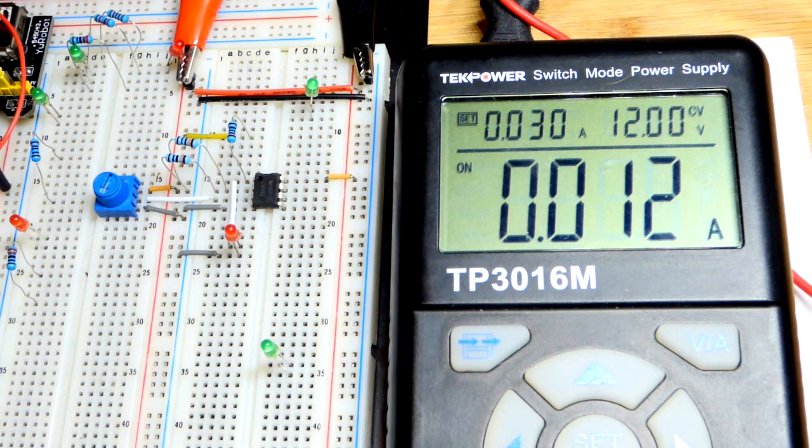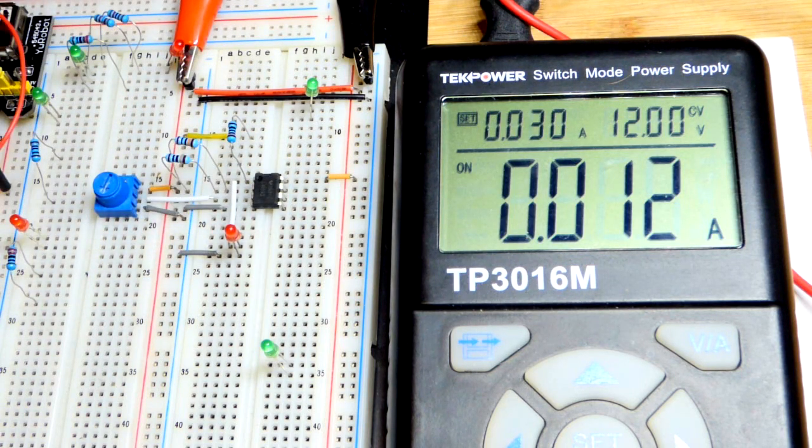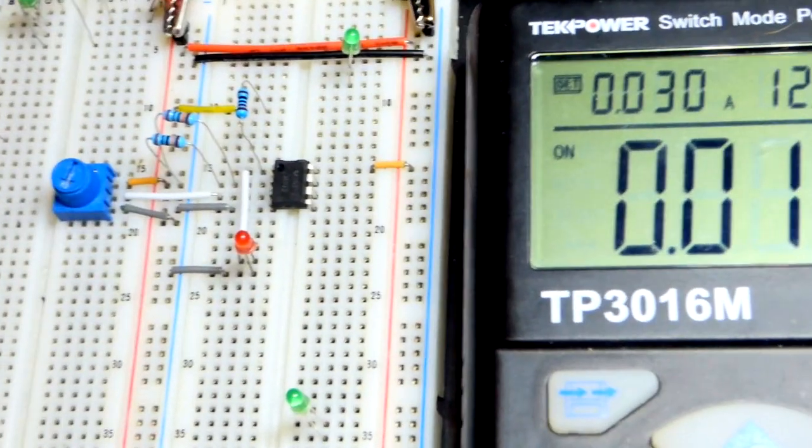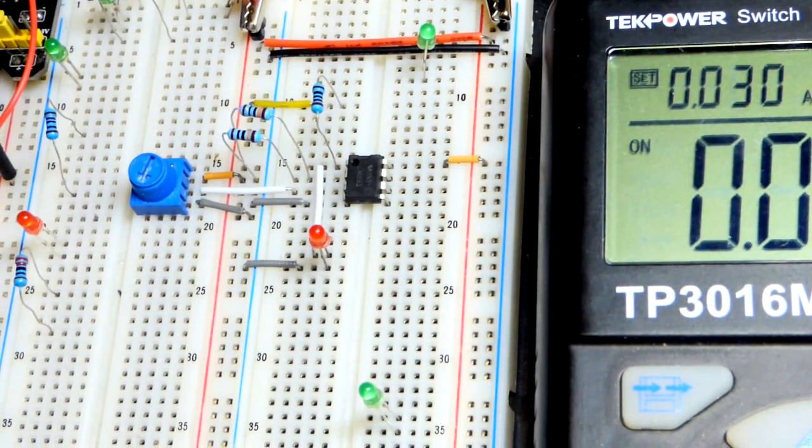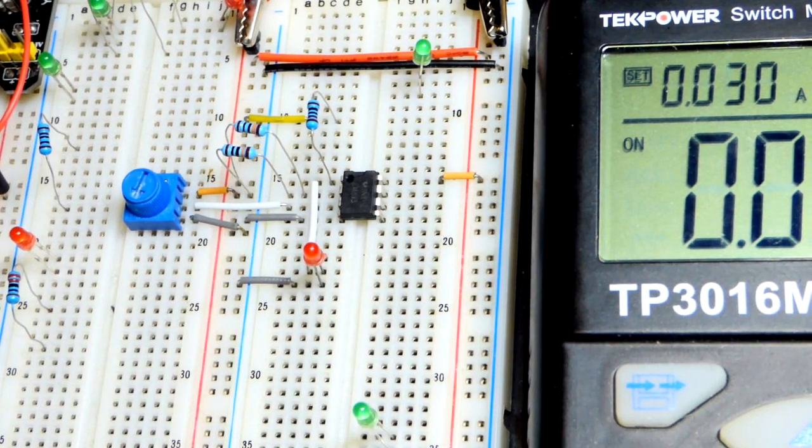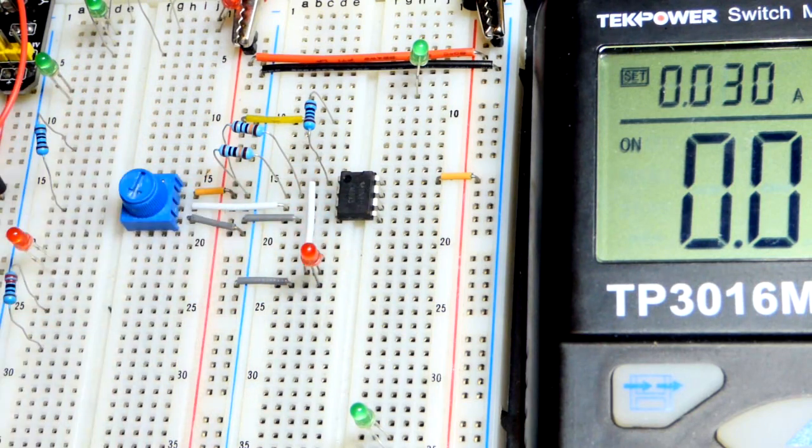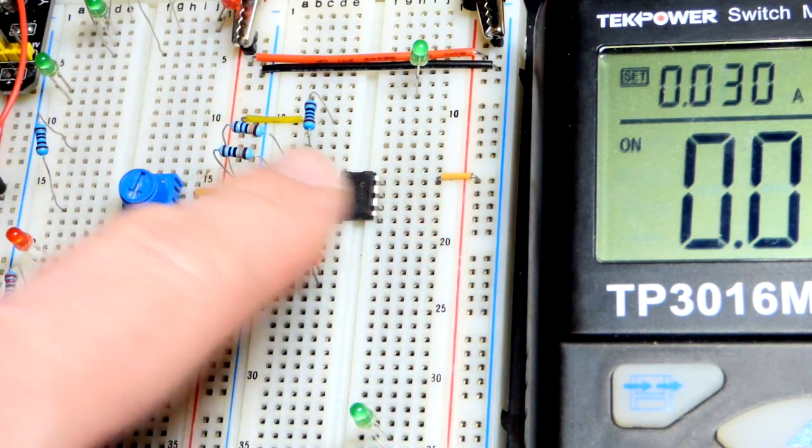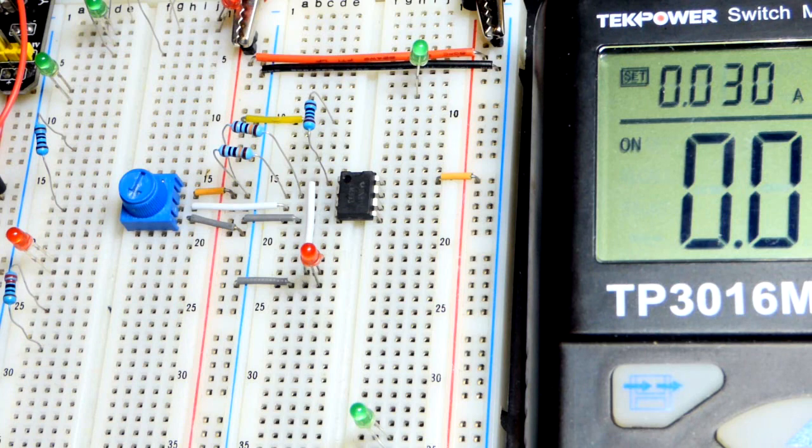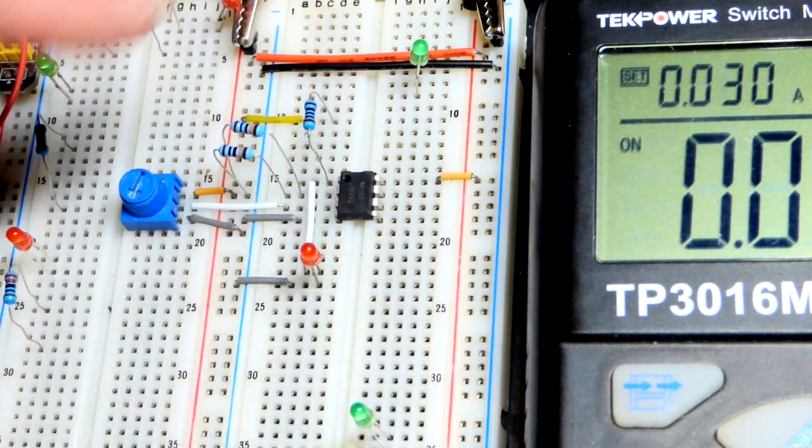And then more current is flowing directly to ground through the integrated circuit right there. So that's the comparator. The difference from a lot of integrated circuits is that it does not source current. It only sinks it. It'll bring it directly to ground. It does not provide power at the output from the positive rail. So hopefully that makes sense. There's a number of integrated circuits that work like that.